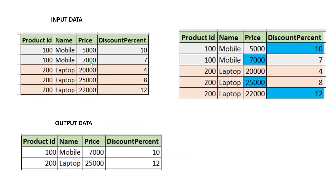So for price we are considering the second record, but for discount percent we are considering the first record. In this way, the final record for product ID 100 should have product name 'mobile', price 7,000 from the second record, and discount percent from the first record. Same is applicable for product ID 200 as well — there are three records, and the second record contains the maximum price of 25,000. For discount percent, 12 is the maximum, coming from the third record of product ID 200.